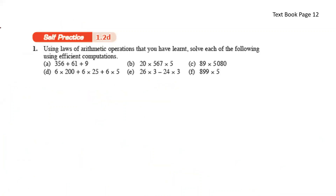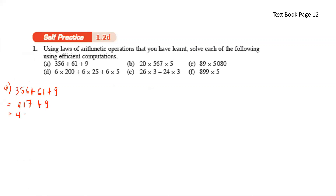Moving on to self-practice 1.2d — using laws of arithmetic operations, solve each of the following using efficient computations. 356 plus 61 plus 9: first 356 plus 61 gives 417, plus 9 gives 426.